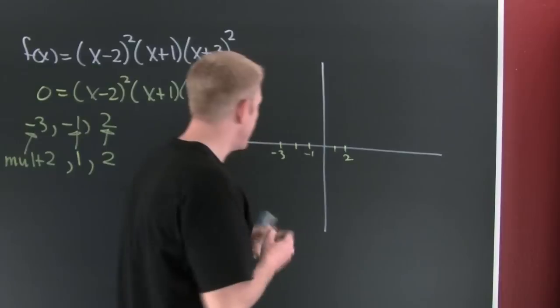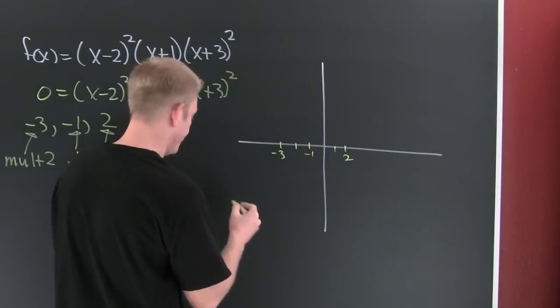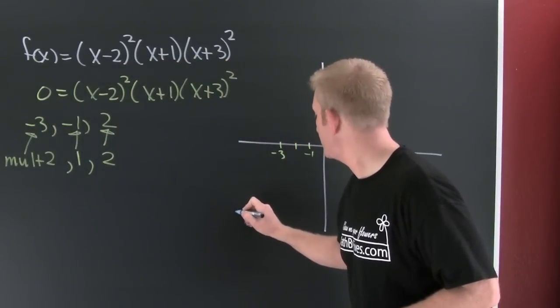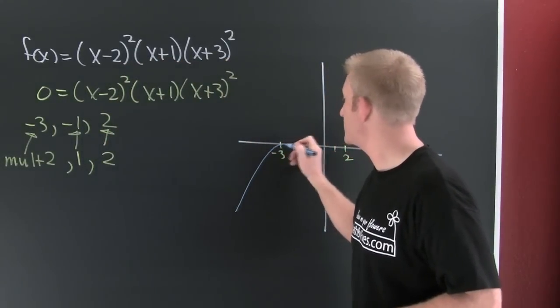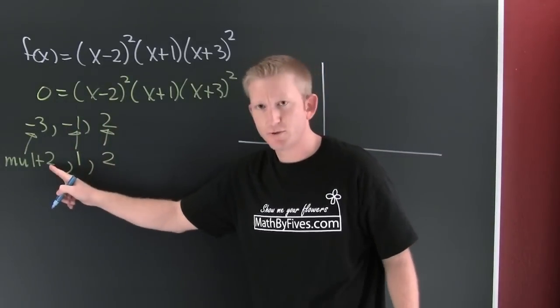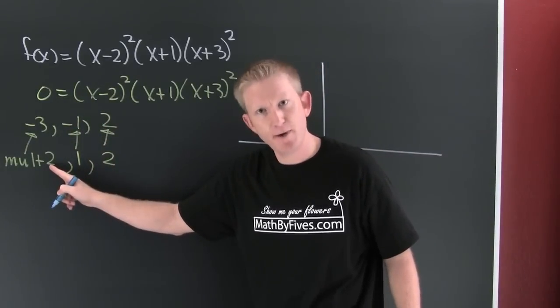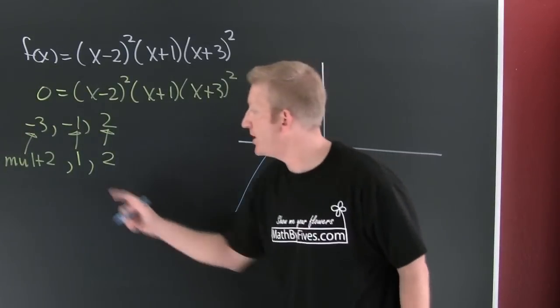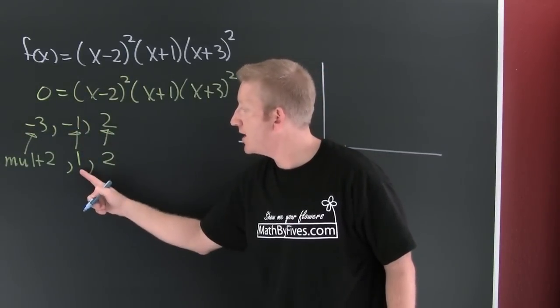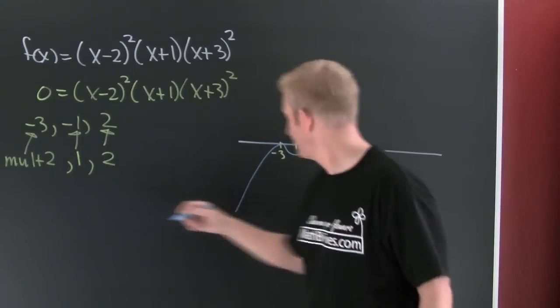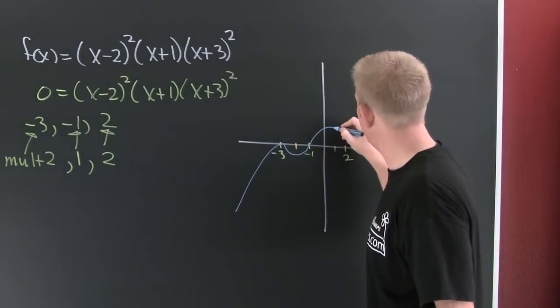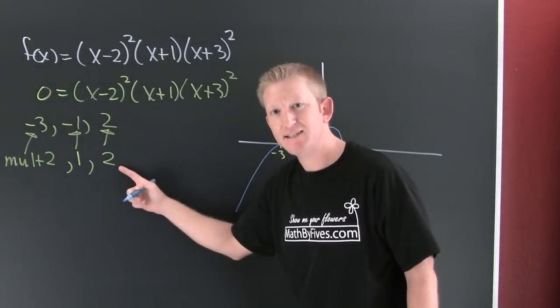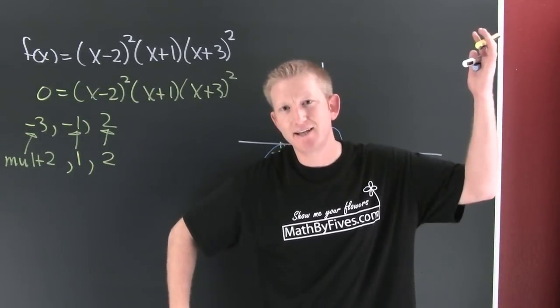So then it starts down here. Now it's going to go to -3. What's the multiplicity at -3? It's 2. So is it going to bounce or cross? It's even, it bounces. -1, does it bounce or cross? It crosses because it has multiplicity 1. 2, does it bounce or cross at 2? It bounces because it has even multiplicity and it does end like this.